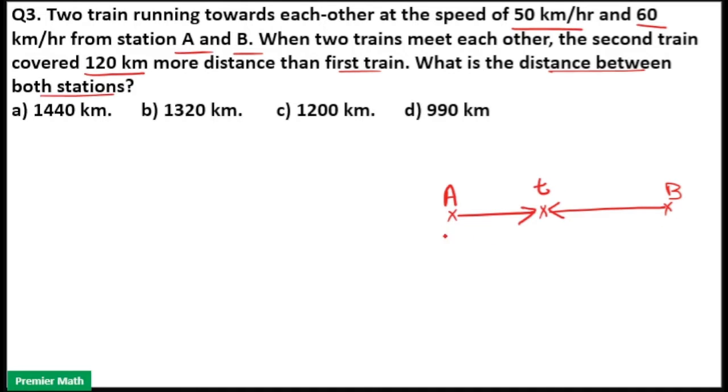The train from A travels with a speed of 50 km per hour and train from B travels with a speed of 60 km per hour. So here the second train, that is the train with speed 60 km per hour, covered 120 km more distance than the first train.